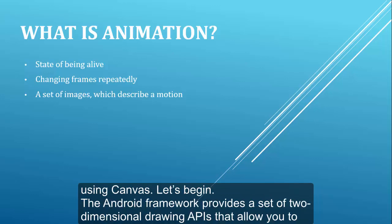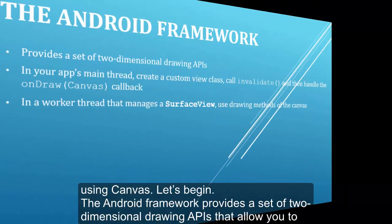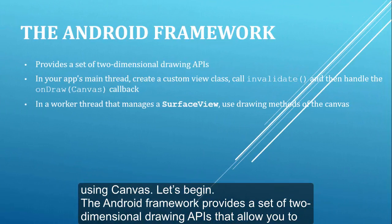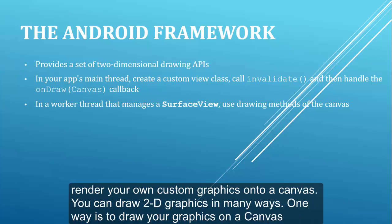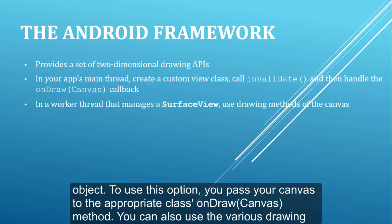The Android framework provides a set of two-dimensional drawing APIs that allow you to render your own custom graphics onto a canvas. You can draw 2D graphics in many ways. One way is to draw your graphics on a canvas object.